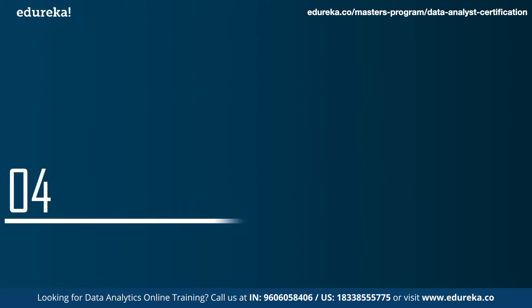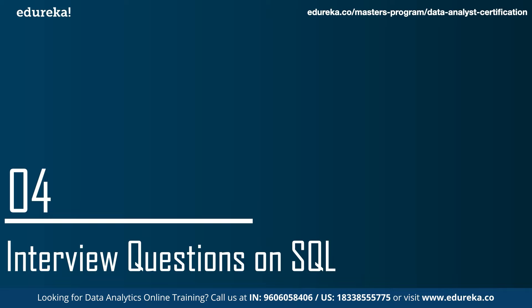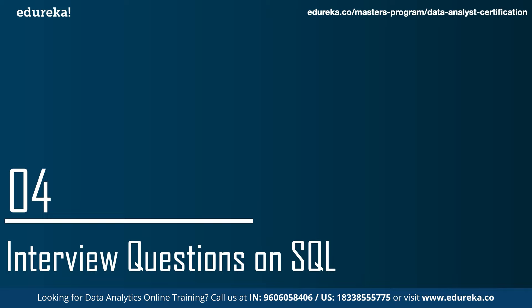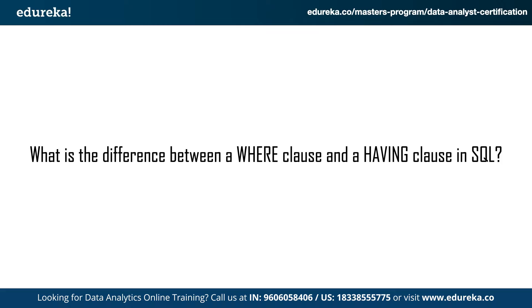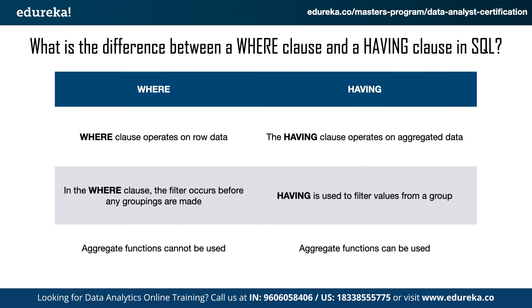Now we move to the fourth section: data analyst interview questions on SQL. The first question is: what is the difference between the WHERE clause and the HAVING clause? The WHERE clause operates on row data, meaning you are only operating on individual rows of data. The HAVING clause, on the other hand, operates on aggregated data. In the WHERE clause, filtering occurs before the groupings are made, but the HAVING clause is used to filter values from a group of data. In the WHERE clause you cannot use aggregate functions, but the HAVING clause allows you to do that.